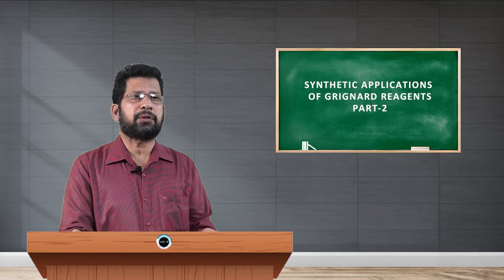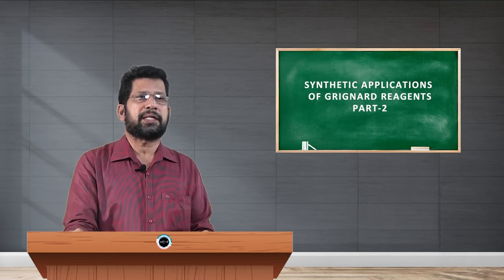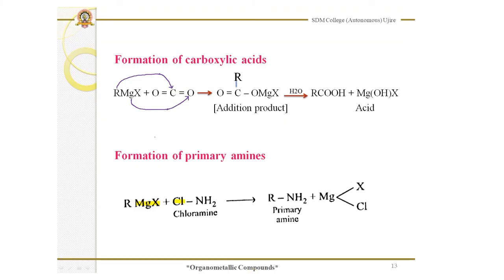Next is the preparation of carboxylic acids. Carboxylic acids are a class of organic compounds with the functional group COOH, and general formula RCOOH. Carboxylic acids can be prepared by the action of Grignard reagent on carbon dioxide.